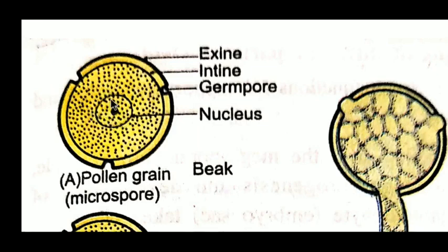The pollen grain has pores called germ pores. In monocots, a single pore is present, while in dicots the pollen grain is triporate, that is three pores are there. The innermost layer, entine, is always attached to the germ pore. This is all about the structure of pollen grain.